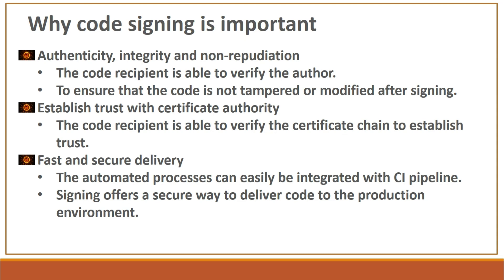Next is fast and secure delivery. The processes can be automated and integrated. These days in the cloud, deliverables are going out every hour or even multiple times within 24 hours. Several patches are going through the DevSecOps pipeline and CI pipeline to verify and validate features, and code signing is happening as part of that. It is being delivered to the production environment, so this has to maintain the integrity, authenticity, and non-repudiation aspect of the delivery.